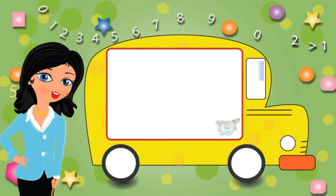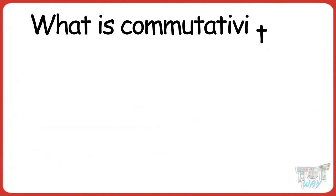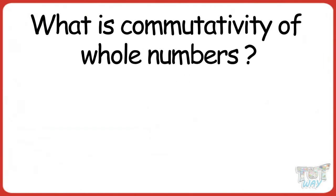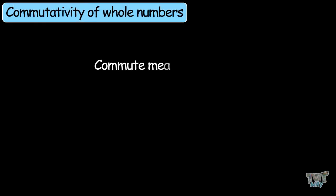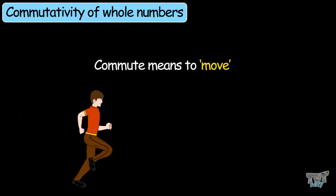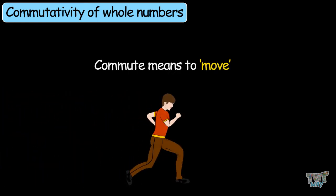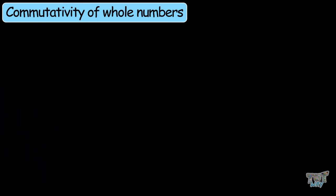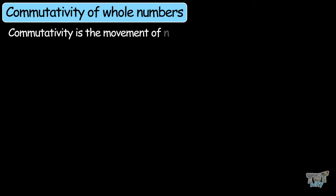Hi friends! Today we will be learning what is the commutative property of whole numbers. So let's start. Commute means to move from one place to another, so commutative property is the movement of numbers.